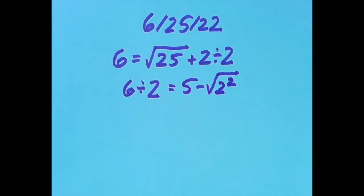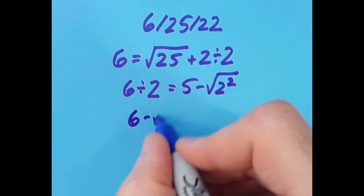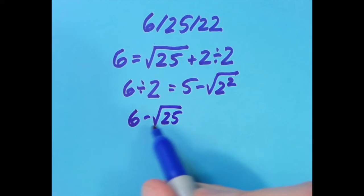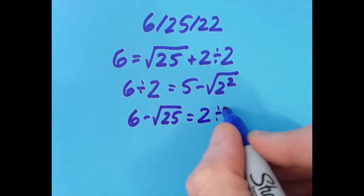I tried it again with the equal sign one more spot to the right. Here I said that 6 minus the square root of 25—that's 6 minus 5, which is 1—equals 2 divided by 2, which is also 1.